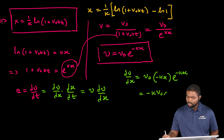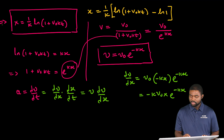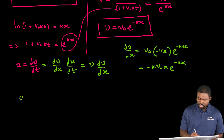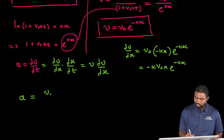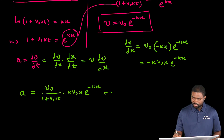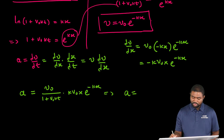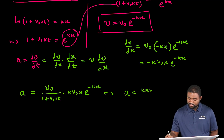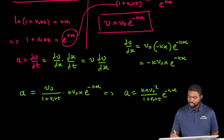So dv/dx equals negative kv₀e^(−kx). Multiplying by v, the acceleration a equals v₀/(1 + v₀kt) multiplied by negative kv₀e^(−kx). Simplifying, a equals negative k times v₀² divided by (1 + v₀kt) times e^(−kx). This gives the expression for acceleration as a function of time.